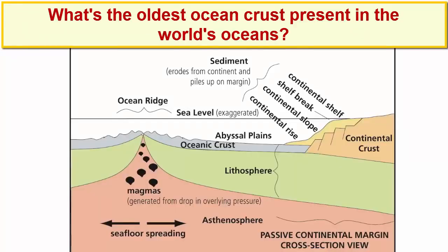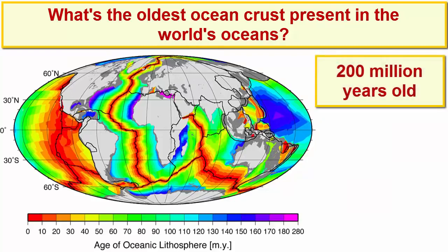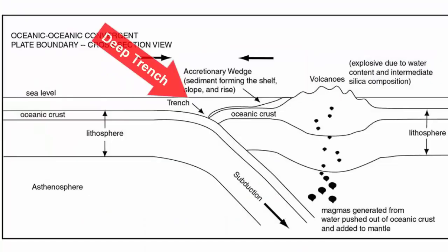How old does ocean lithosphere need to be before it detaches and subducts on its own? All we can find to answer that question is the age of the oldest ocean rock currently residing in the oceans — 200-million-year-old rock subducting under the Marianas Trench in the Pacific. The Marianas Trench is the deepest part of the planet because it's a converging boundary where two ocean plates collide, both riding low isostatically, with no nearby continents to fill the trench with sediment.